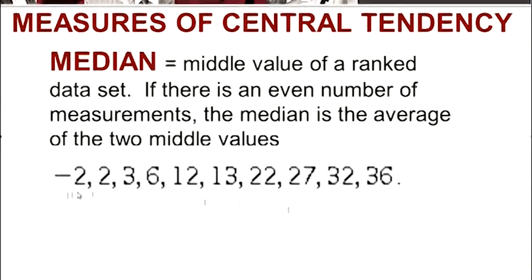I've taken the same set of data that we had a minute ago, and I've just put it in order. So the smallest number was negative 2, and then positive 2, 3, 6, 12, and so on up to the largest value was 36.